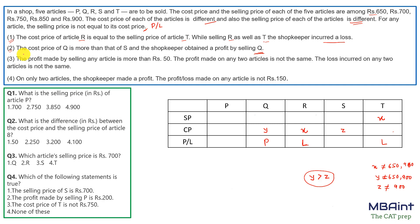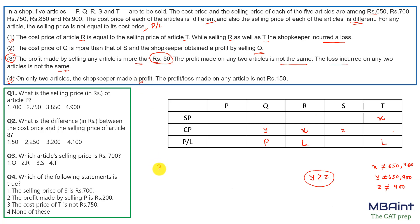The third clue states the profit made by selling any article is more than 50, all numbers are multiples of 50, and the profit made by any two articles is not the same. The loss incurred by any two articles is also not the same. The fourth clue says only two articles make a profit, which indirectly means three articles will make a loss and two will make a profit.